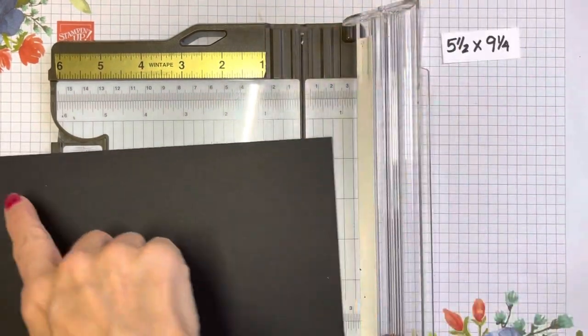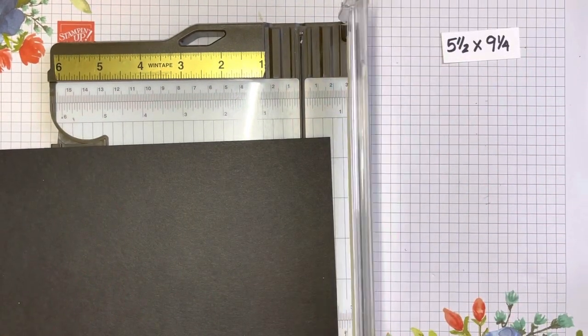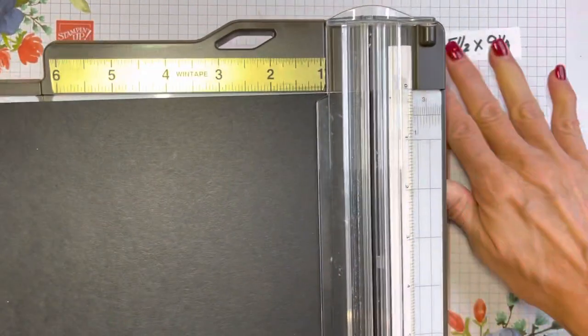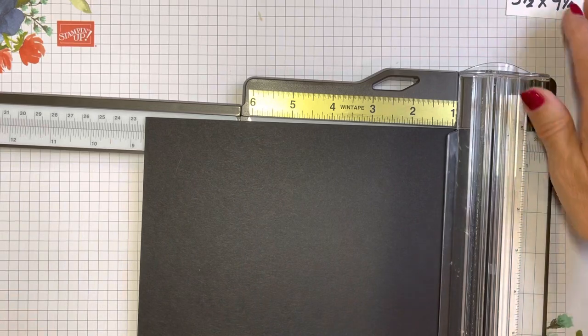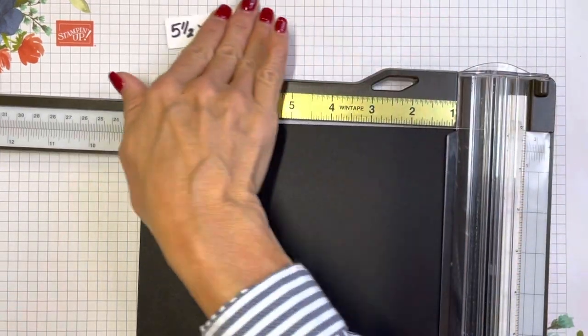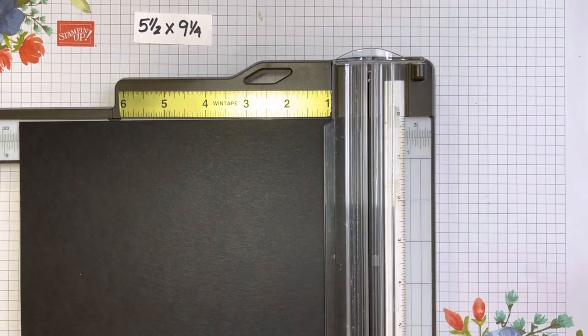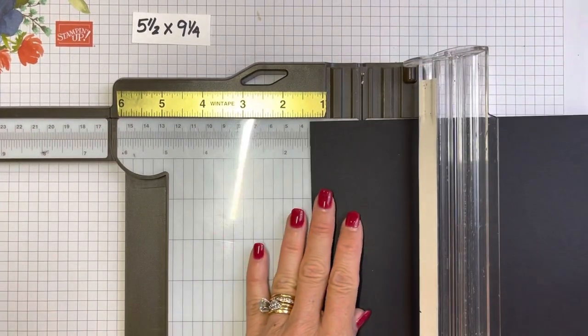The first thing we're going to start with is our black card base. You're going to cut your card base on the 11 inch side down to 9¼. It's going to be 5½ by 9¼. You're going to take that 9¼ inch side up at the top.